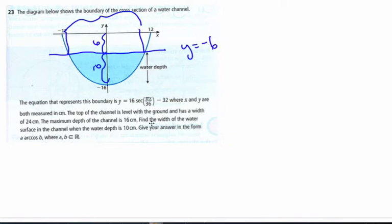If I want to find the width, if I can find this distance and double it, I can find the width. So I'm looking for the point of intersection between y equals negative 6 and the curve.